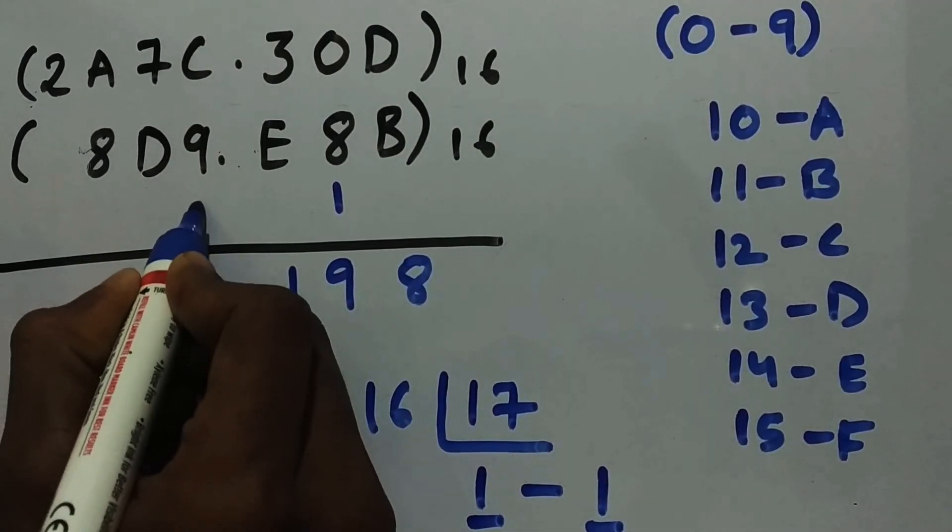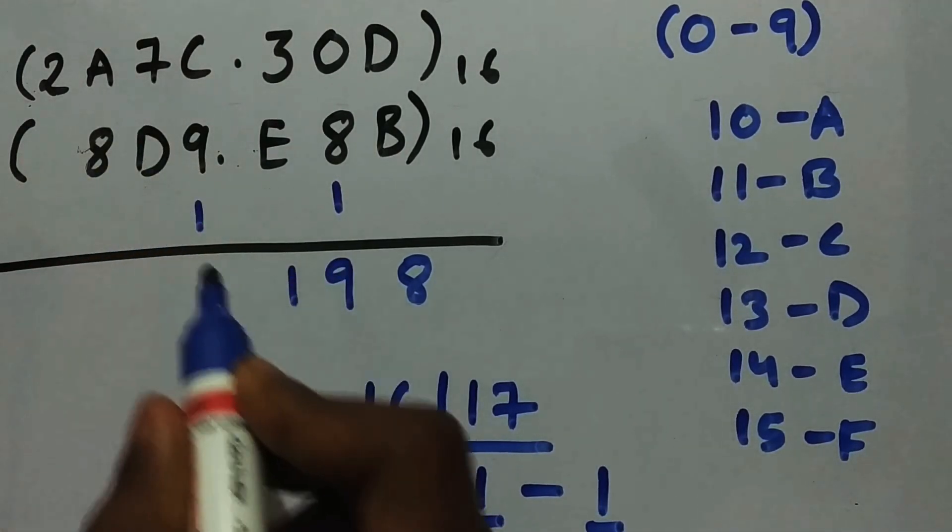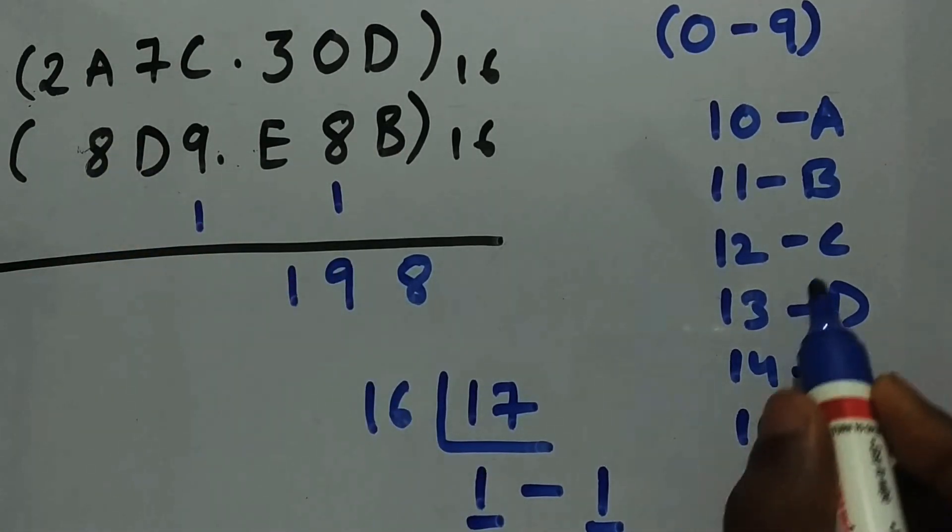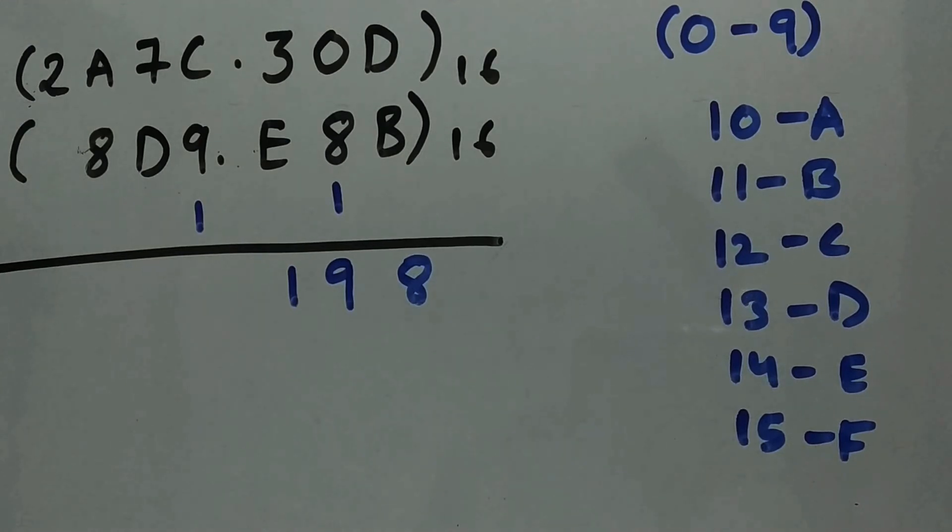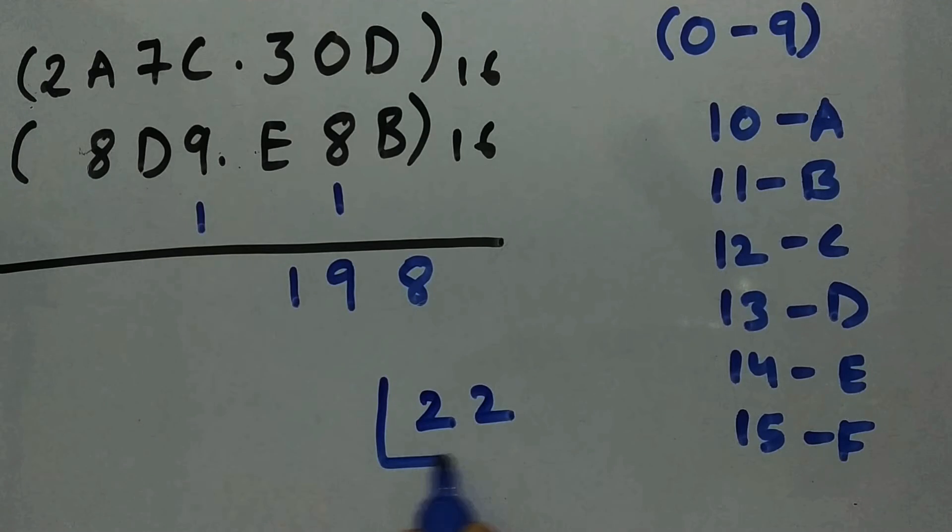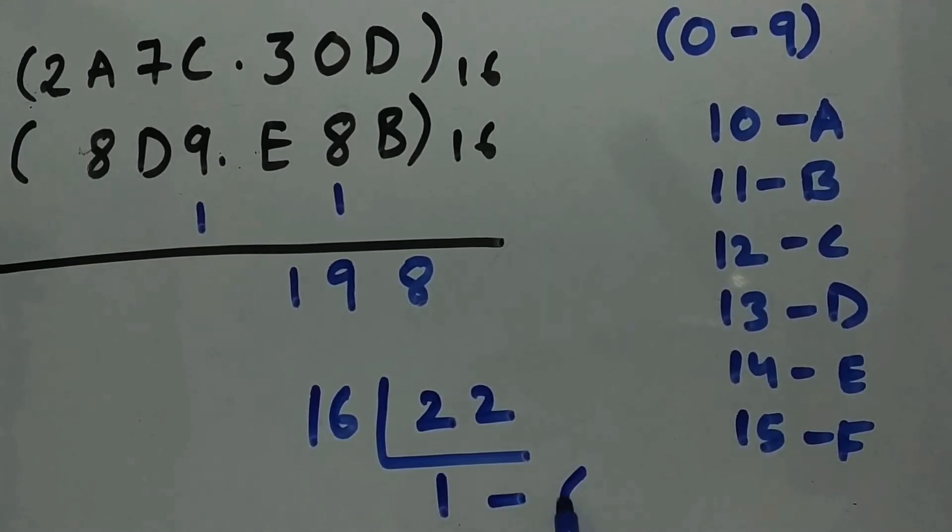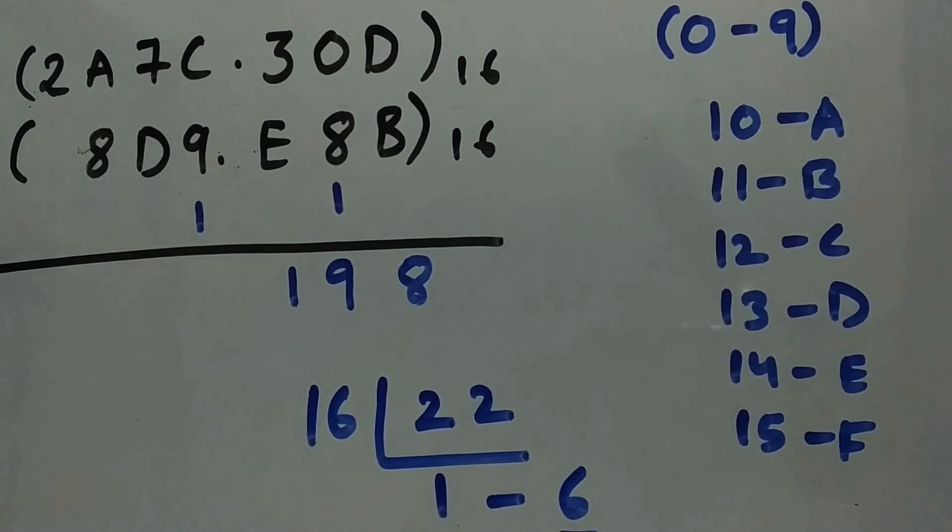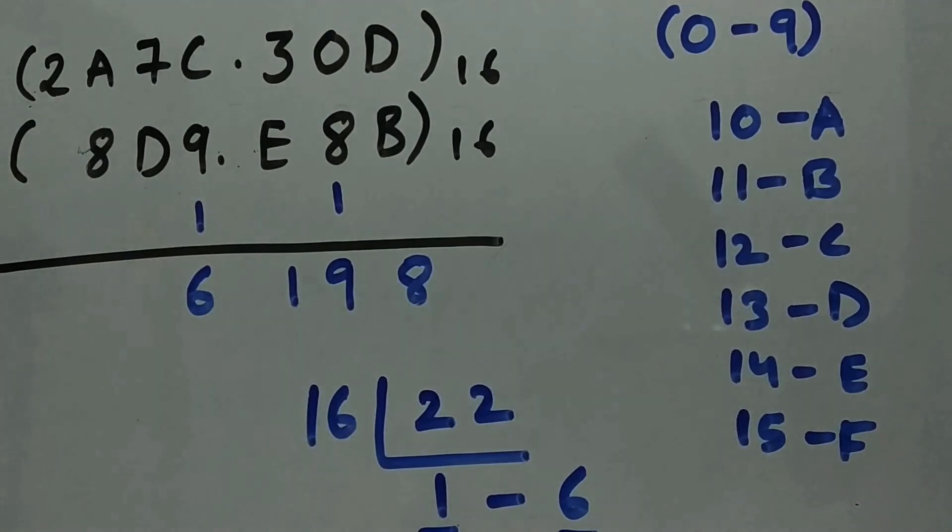So next, let's add C plus 9 plus 1. C is 12, so 12 plus 9 is 21, plus 1 is 22. Now let's convert 22 into hexadecimal: 16 goes 1 time and remainder is 6. So this is sum and this is carry. We need to write sum over here, that is 6, and carry 1 is